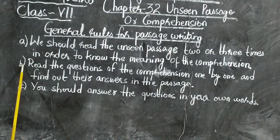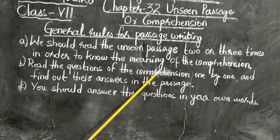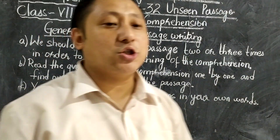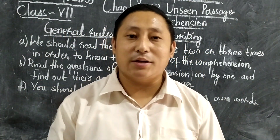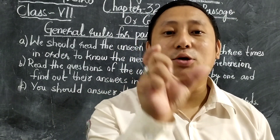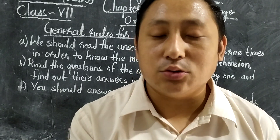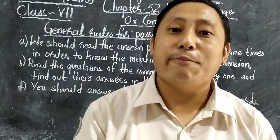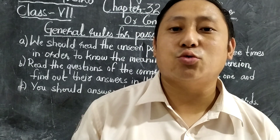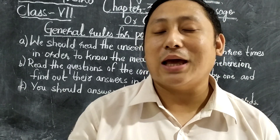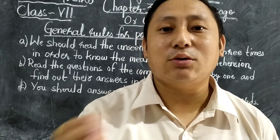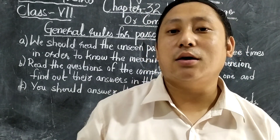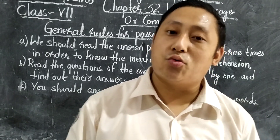Point number two: read the questions of the comprehension one by one and find their answers in the passage. When the question is given to you, go to the particular point that the question is asking and give the answer from the passage. There will be so many answers in the passage, so you have to find out exactly what the question is asking and write only that. Not more than that — if you write unnecessary things, your marks will be deducted or your answer will be wrong.